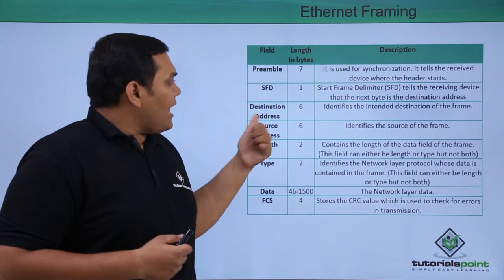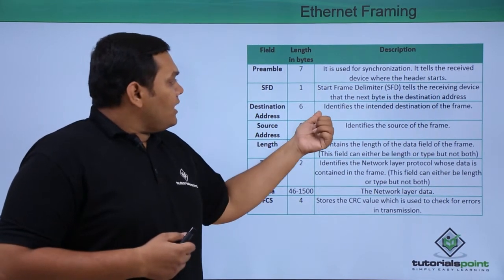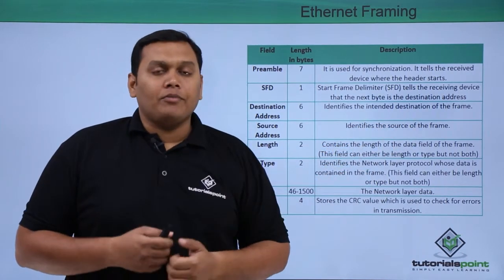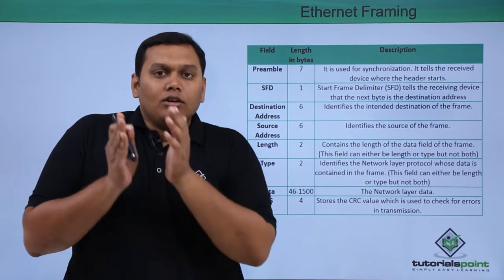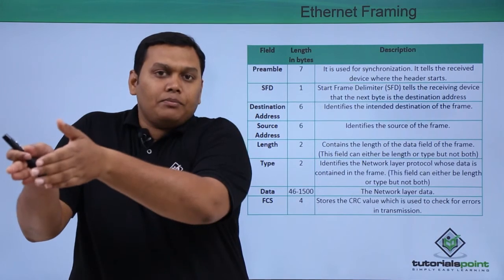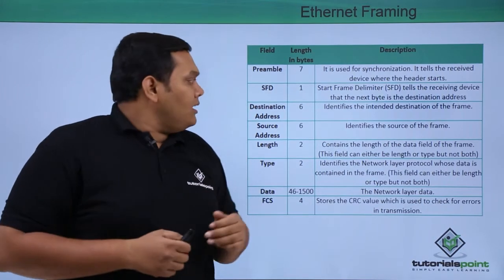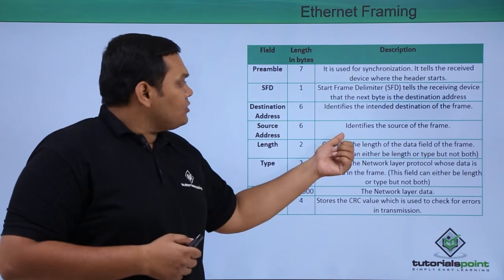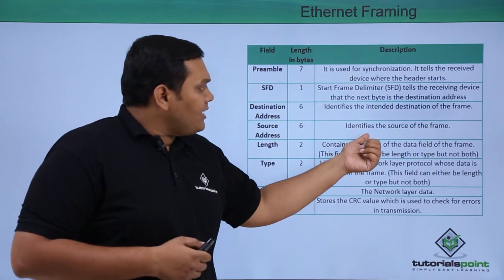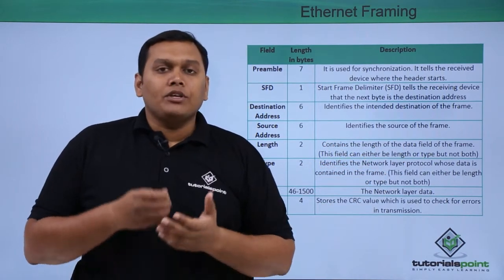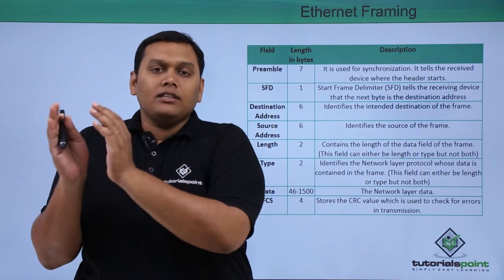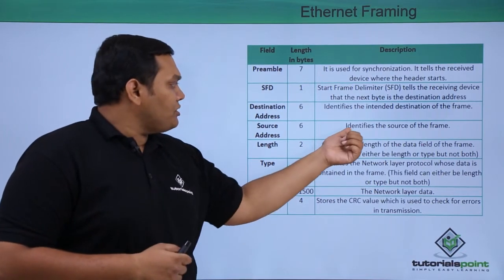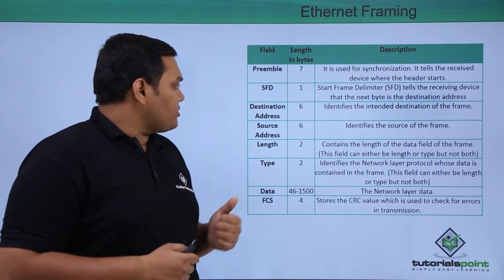The Destination Address field identifies the intended destination of the frame and passes it on to the Source Address. The Source Address identifies the source of the frame — the origin information is available in this field.